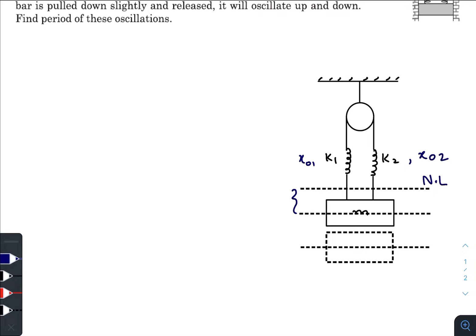The first spring applies the force of k₁x₀₁ upwards and the second one applies the force k₂x₀₂ upwards. In equilibrium condition, mg is being balanced by k₁x₀₁ plus k₂x₀₂. This is our first equation.